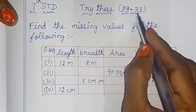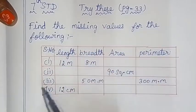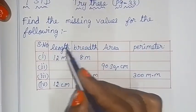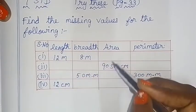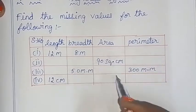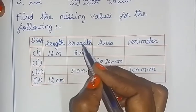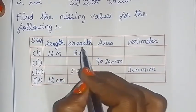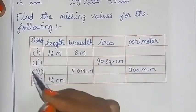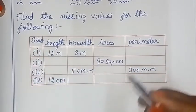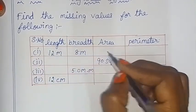Hello children! Let's try these in page 33. Find the missing values for the following. There are 4 subdivisions — length, breadth, area, and perimeter — making 4 columns. There are 4 rectangles and 4 values to find. Let's try these.